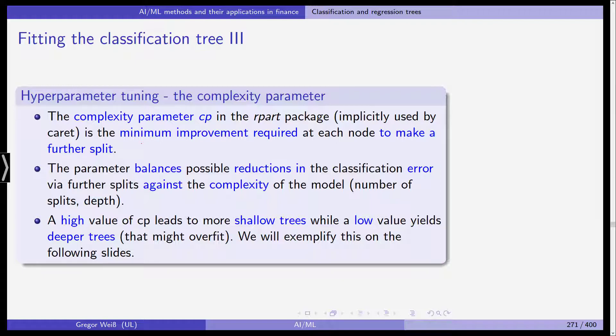Remember that we are trying to train a tree here, meaning that at each level, at each node, you need to decide whether you want to go one level deeper or if you say, okay, this is enough, the tree is deep enough, we have enough accuracy. This parameter balances possible reductions in the classification error via further splits against the complexity of the model, which is the number of splits or the depth of the tree.